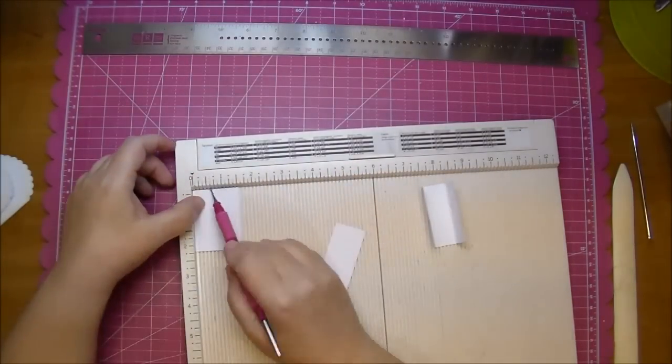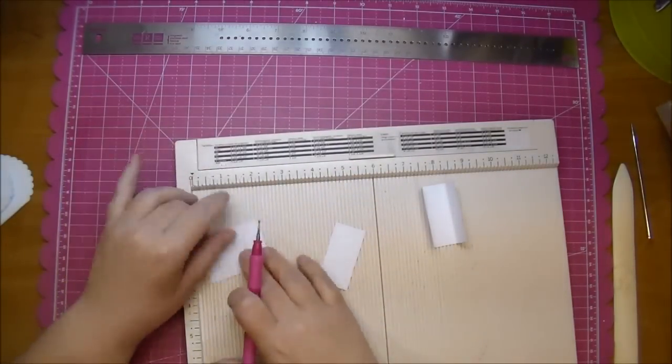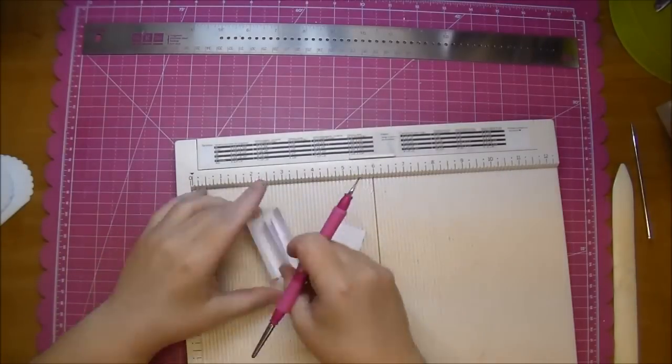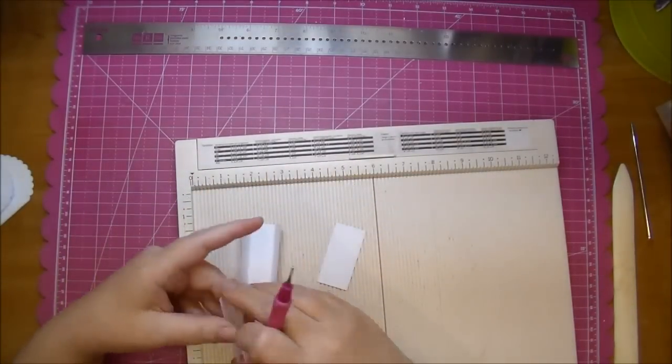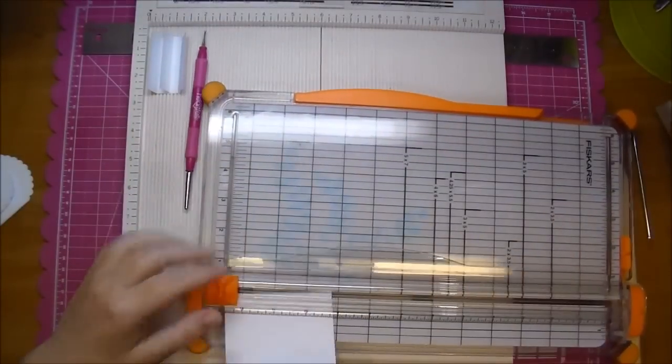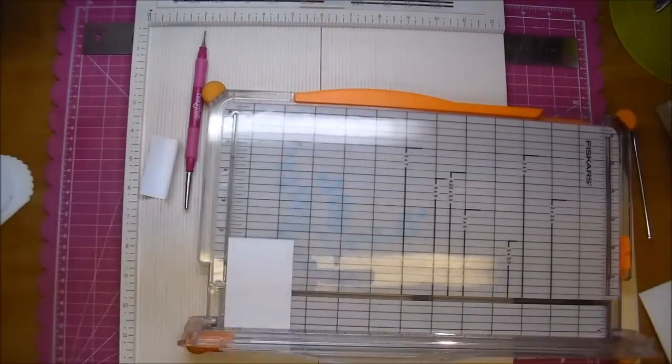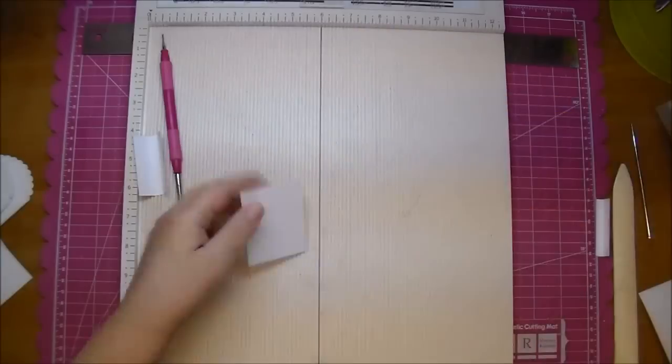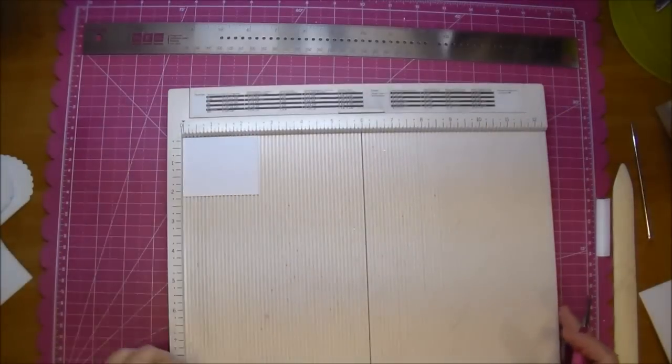So I'm just adding my score marks. I'm adding them at 5/8 of an inch, flipping it all the way around and again 5/8 of an inch. I screwed up one of my measurements here so I'm just cutting out, I believe it was the two and a half at this point. So I'm just scoring that as well.